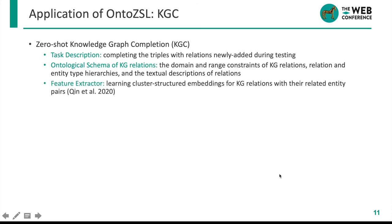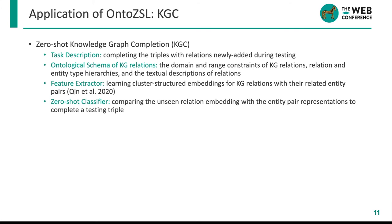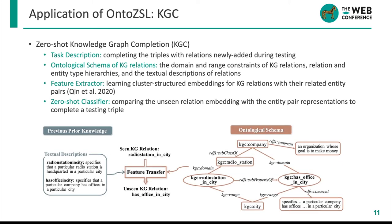We also apply onto-ZSL to zero-shot knowledge graph completion. Here the feature extractor learns cluster-structured relation embeddings with related entity pairs, and with the generated embeddings of unseen relations, we complete the testing triples by comparing the unseen relation embedding with candidate entity pair representations. Compared with the previously used textual descriptions of relations, our ontological schema contains more semantics to build relationships between KG relations.